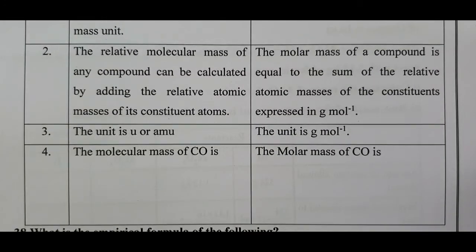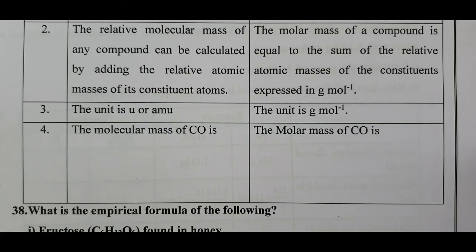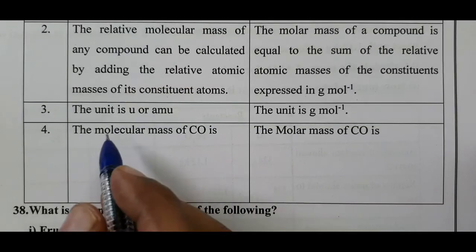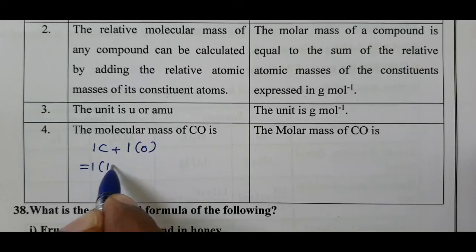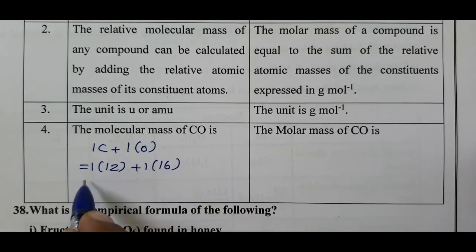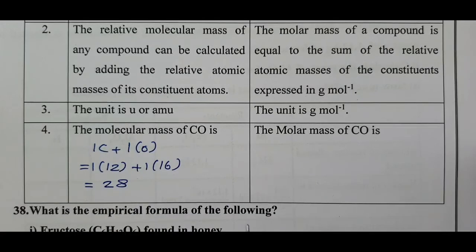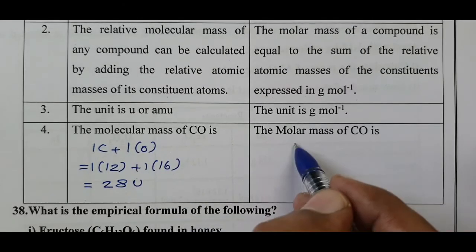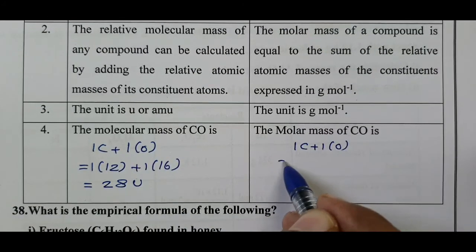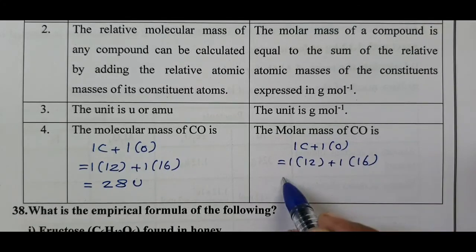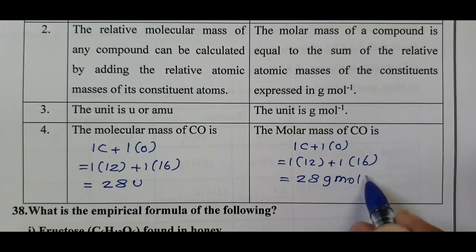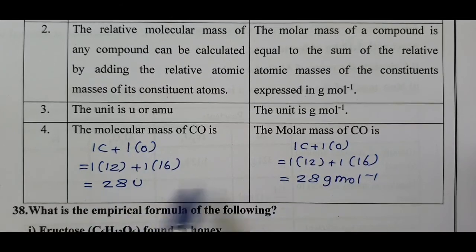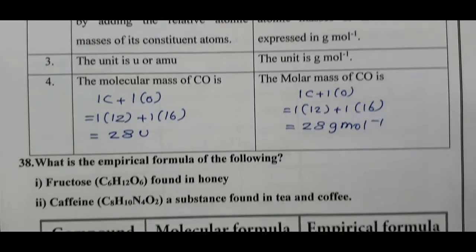To calculate the molecular mass of carbon monoxide (CO): it contains one carbon atom and one oxygen atom, so 1×12 + 1×16 = 28 U. For molar mass: 1×12 + 1×16 = 28 gram mole power minus 1. There is no change in magnitude — the change is only in the unit.